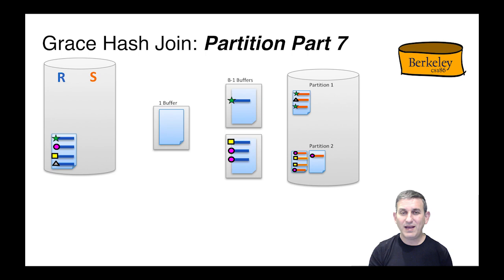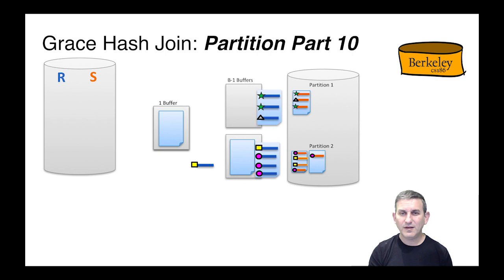Now we'll do the same thing for R. We read one page in and use the same hash function to partition it. The stars go to the top, and the squares and circles go to the bottom. We get the second page of R, partition it, and write our outputs to the matching partitions of R that go along with the partitions of S.